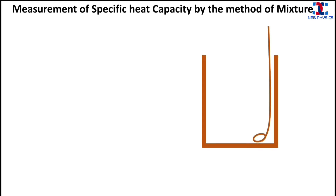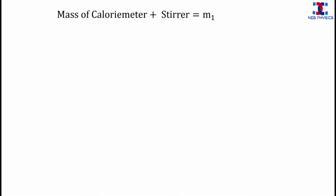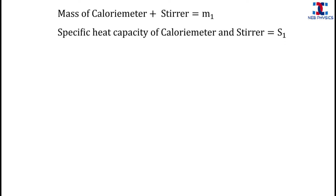Now let's learn to find the specific heat capacity of a solid by the method of mixture. First we take a dry and empty calorimeter and stirrer and measure its mass. Let the mass be m1, so: mass of calorimeter plus stirrer equals m1. The specific heat capacity of the calorimeter and stirrer — generally the specific heat capacity of copper — is given as S1.